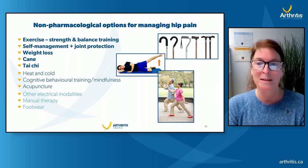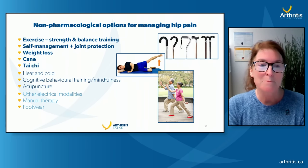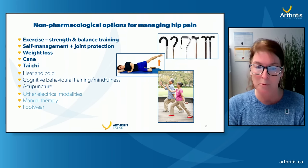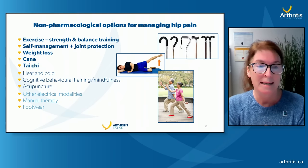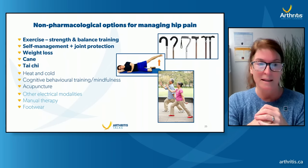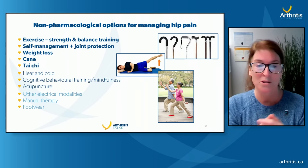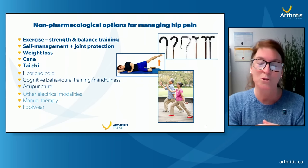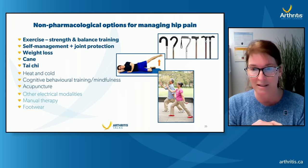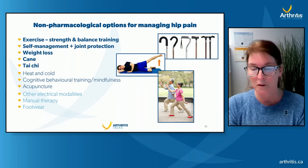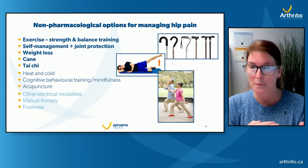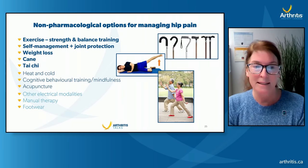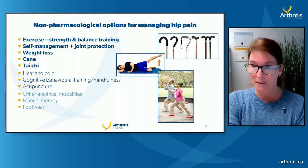Manual therapy involves techniques like tractioning — literally pulling on the leg to unload the joint. The hip moves in different directions and some can be more restricted depending on where the arthritis is. We can traction the hip to get it moving more easily, but again only as an adjunct to exercise therapy — alone it will not change arthritis or provide lasting benefits. Good footwear helps absorb shock, improve balance, and align the leg from the foot up through the knee and hip.